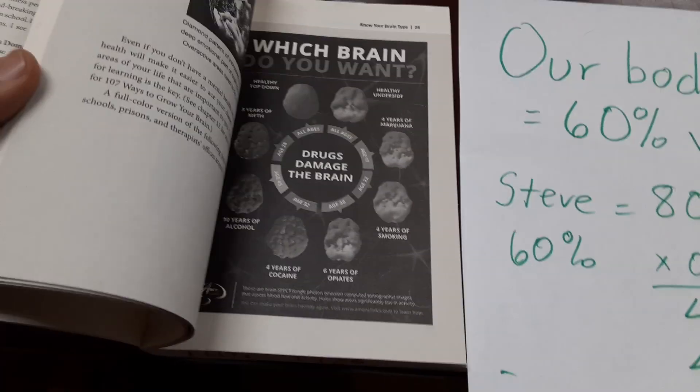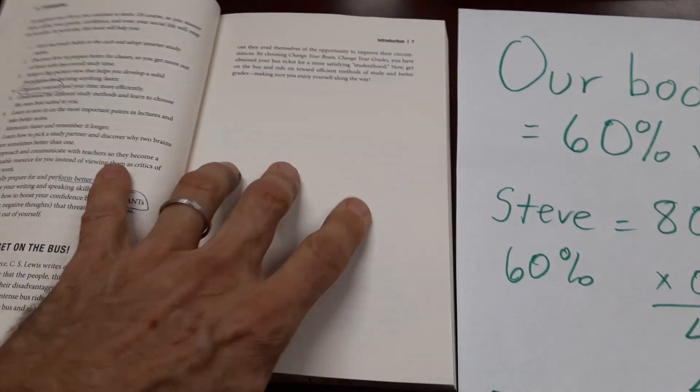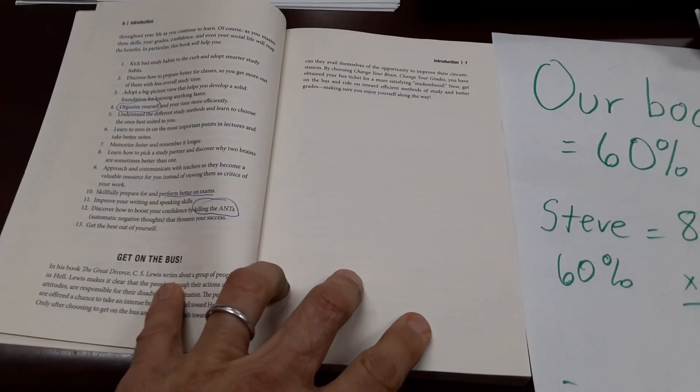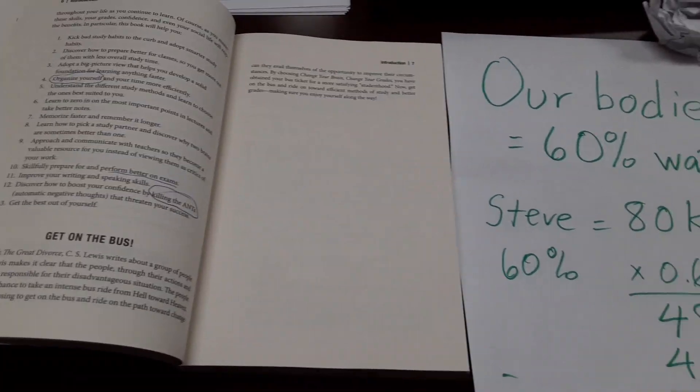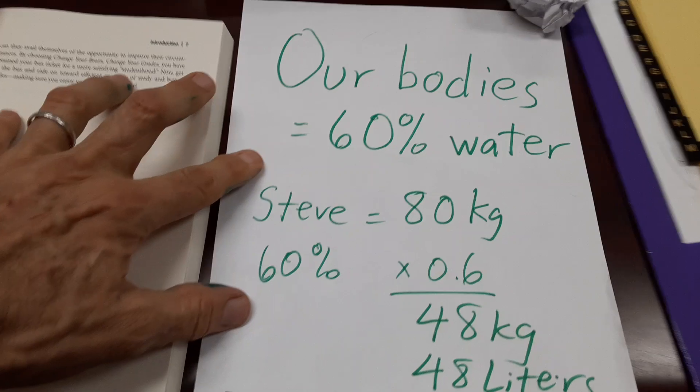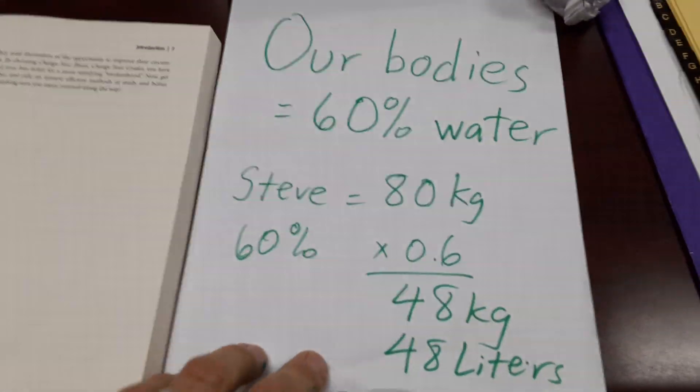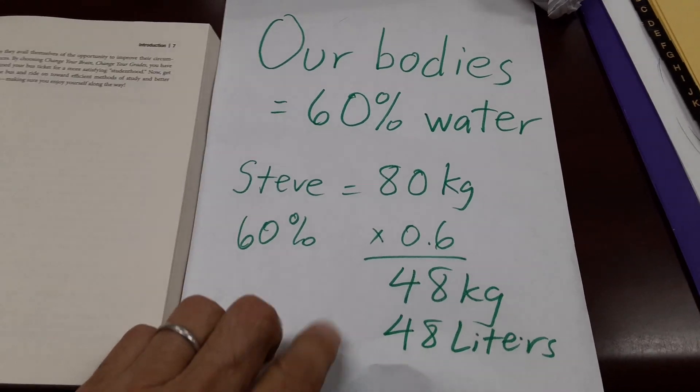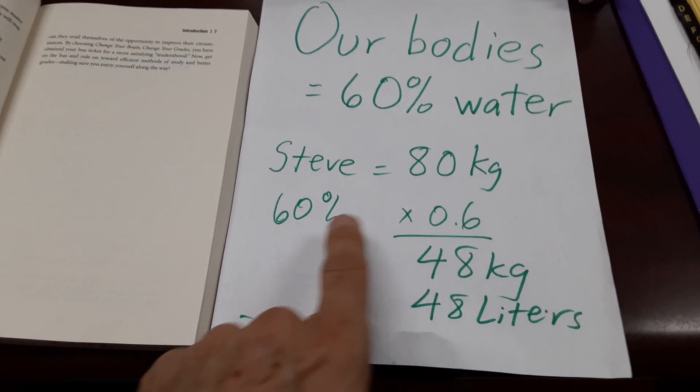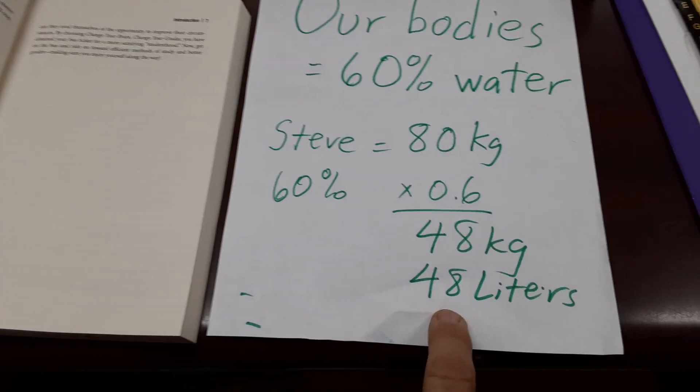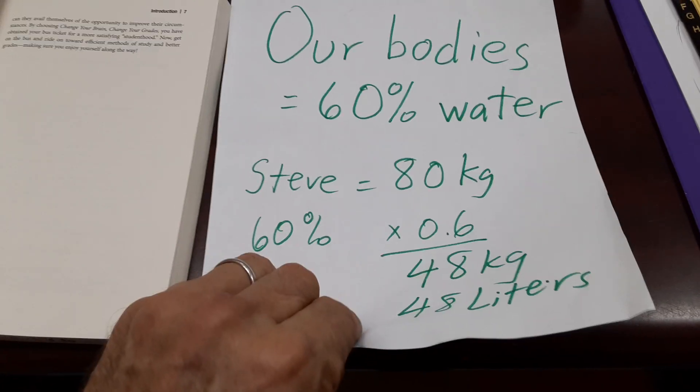The items I marked that I thought were particularly valuable: our bodies are about 60 percent water, and I weigh 80 kilograms. So 60 percent means I've got 48 liters of water in my body.